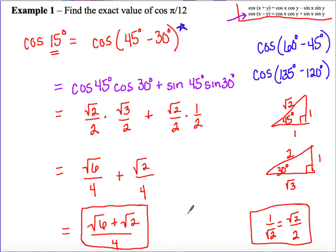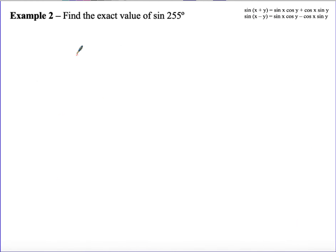Moving on, there's really a limited number of problems where we can rewrite an angle this way, since we need angles that add or subtract to a special triangle value. So a lot of answers will look similar. For example 2, find the sine of 255 degrees. Think about what adds or subtracts to 255 from the special triangles or angles with a nice reference angle from them.